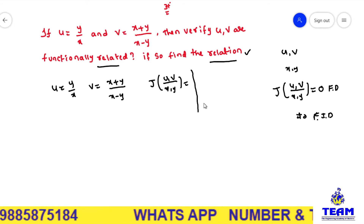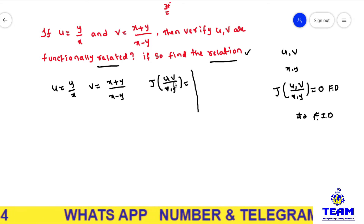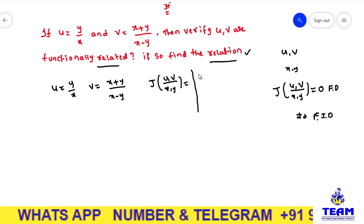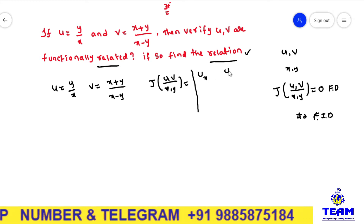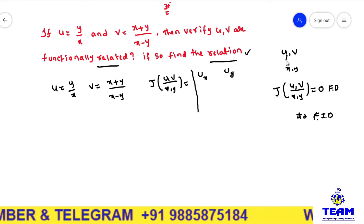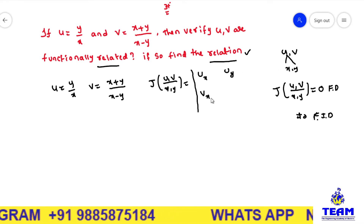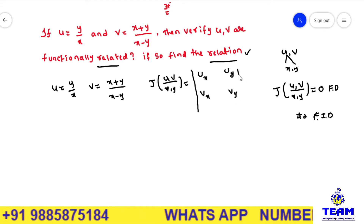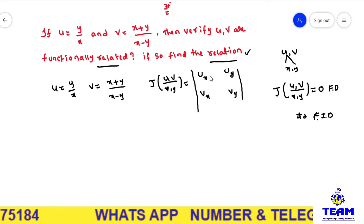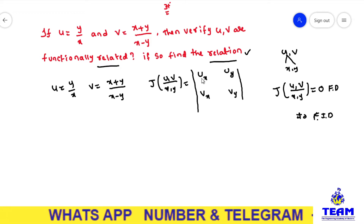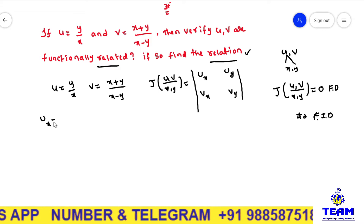From the definition, the Jacobian is defined as dou of u comma v by dou of x comma y. You differentiate u partially with respect to x, u partially with respect to y, then v with respect to x, and v with respect to y. We need to find out this determinant. So first we need to find out dou u by dou x — that is, the partial differentiation of u with respect to x.